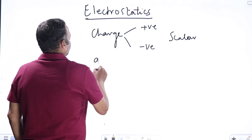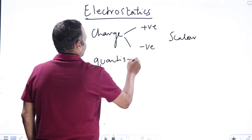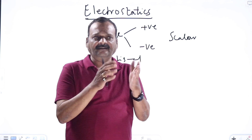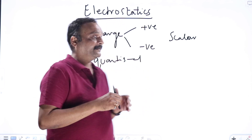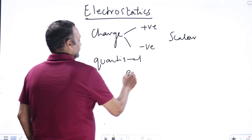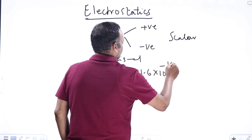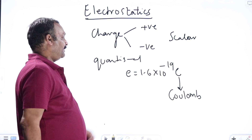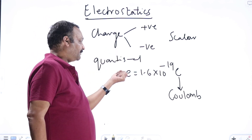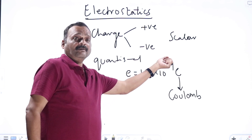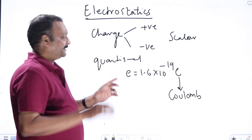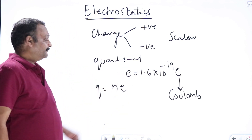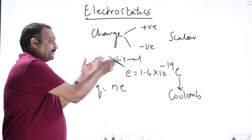This charge is found to be quantized. That is, charge is always found in multiples of a fundamental unit, denoted by e. This e is measured to be 1.6×10⁻¹⁹ coulombs, where coulomb is the SI unit of charge. Any amount of charge on any object must be in multiples of this only — that is, Q = ne. N times e means either 1e or 2e or 3e; a fraction of e has never been observed.